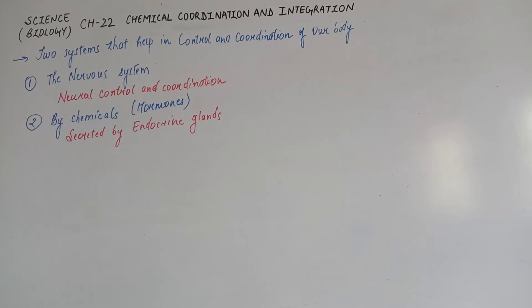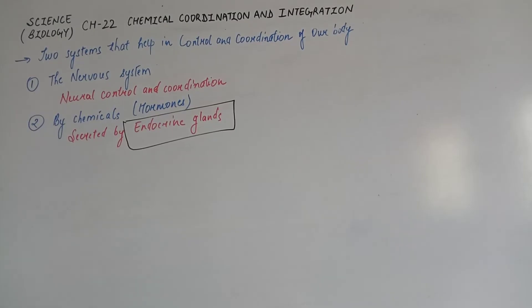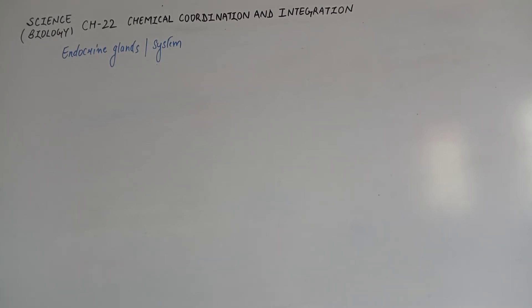जो chemicals होते हैं जिनको हम hormones बोलते हैं, वो secret करते हैं endocrine glands। हमारी body में कुछ glands होते हैं जिनको हम endocrine glands बोलते हैं। अलग-अलग endocrine glands अलग-अलग specific hormones secret करते हैं। सारी endocrine glands को मिलाकर हम endocrine system भी बोल सकते हैं। Glands तीन टाइप की होती हैं।